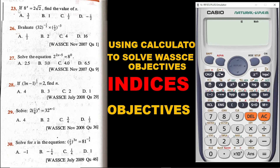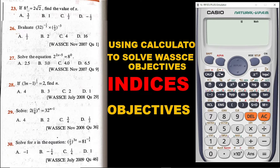The first question: if h exponent x is equal to 2 root 2, find the value of x. For using a calculator to solve indices, you do not need any special function. All you need to do is just enter the question the way you say it. So let's enter this equation on the calculator.